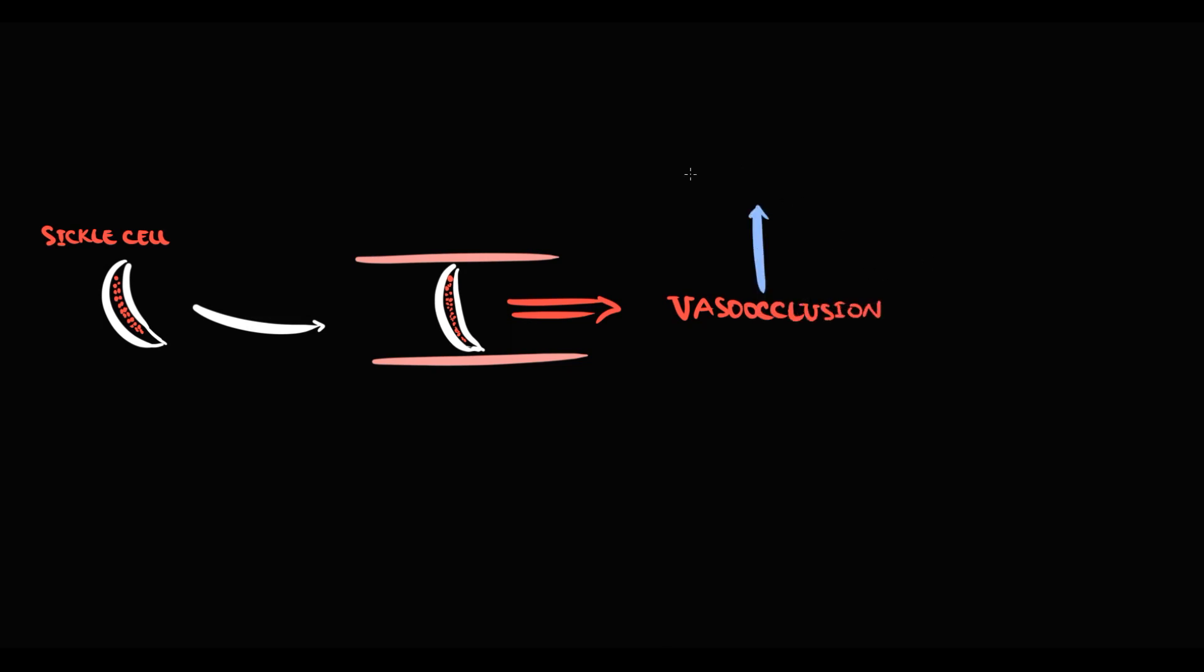Obstruction to venous outflow causes accumulation of deoxygenated blood in the organs. Obstruction of the splenic vein causes splenomegaly. Also, because we cannot use obstructed blood in our circulation, the total blood volume decreases, and because of this, blood pressure decreases.